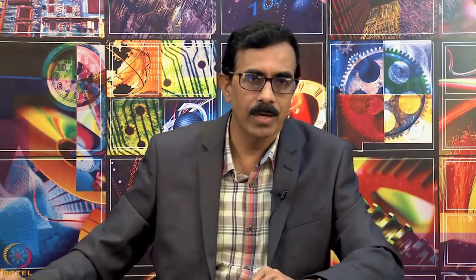Graphite oxide is a multi-layer system, whereas in a graphene oxide dispersion, few layers or monolayer flakes can be found. One can add epoxide, hydroxyl groups, carbonyl groups, or even carboxylic groups, and this is how the dispersion of these groups can be visualized on a single graphene sheet. You can have all kinds of oxygenated functionalities on the surface of graphene.